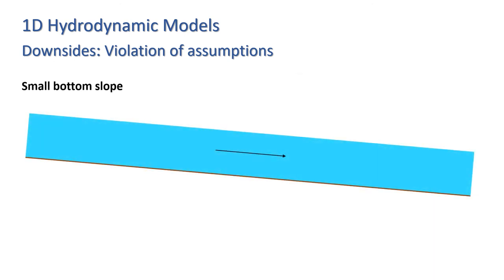Finally, we have the assumption of a gentle bottom slope. This can cause problems if applied to steep slopes, even if the flow is subcritical. Frequently models exhibit instabilities in such cases.